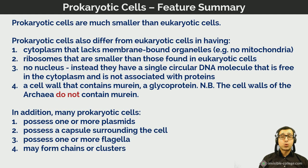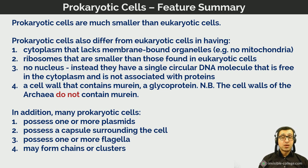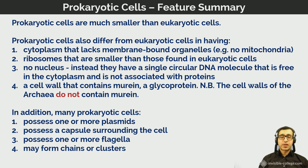Prokaryotes have no nucleus and their cell wall is made of the glycoprotein murein — different from the cell walls of plant cells or fungi. In addition, many prokaryotic cells possess one or more plasmids, a capsule or slime layer preventing desiccation, and one or more flagelli. When bacteria form chains or clusters, they are not considered a multicellular organism — they are individual unicellular organisms that have clustered together in a colony.